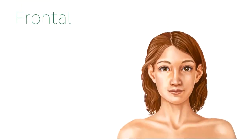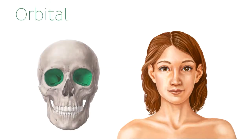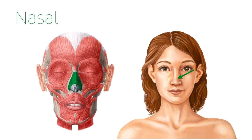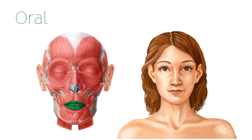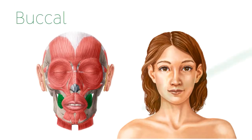The frontal region refers to the forehead, or more specifically the area of the frontal bone of the skull. The orbital region refers to the region around the eyes, where the associated musculature and neurovasculature are located in the bony orbit, or eye socket. The nasal region refers to the nose, in the area of the nasalis muscle. The oral region refers to the mouth and the lips. The mental region refers to the chin, in the area of the mentalis muscle. And the buccal region is the area of the cheek, where the buccinator muscle is found.